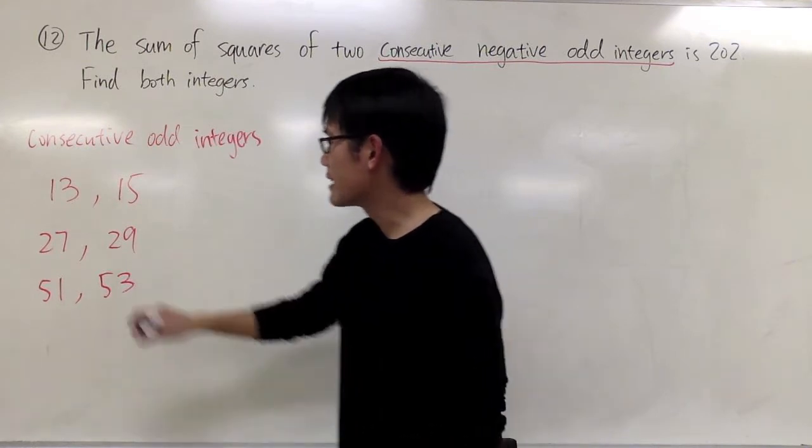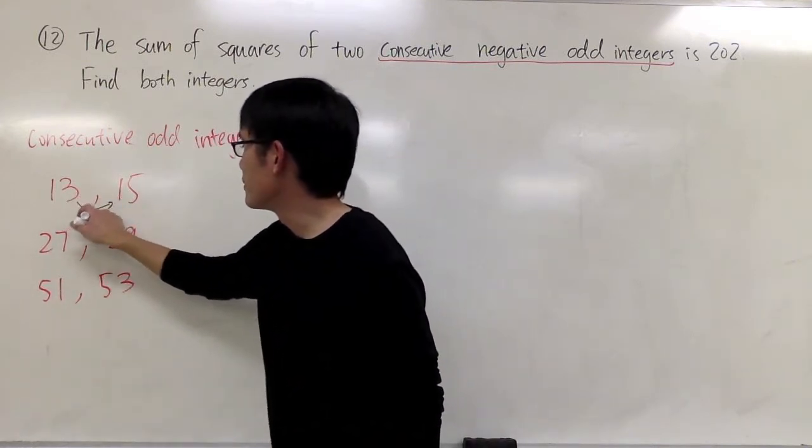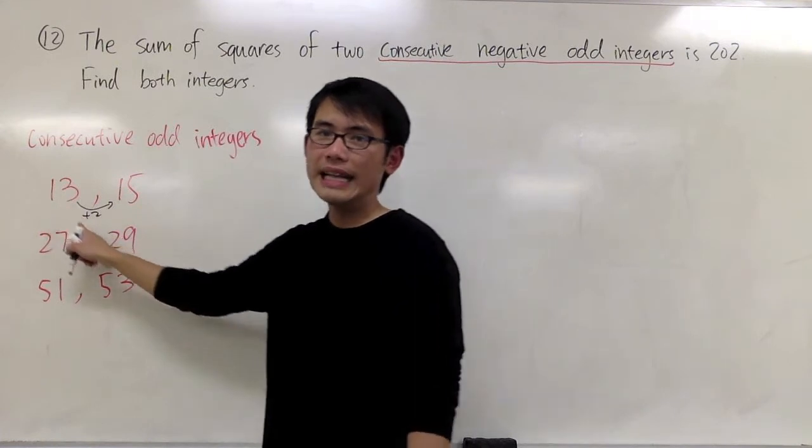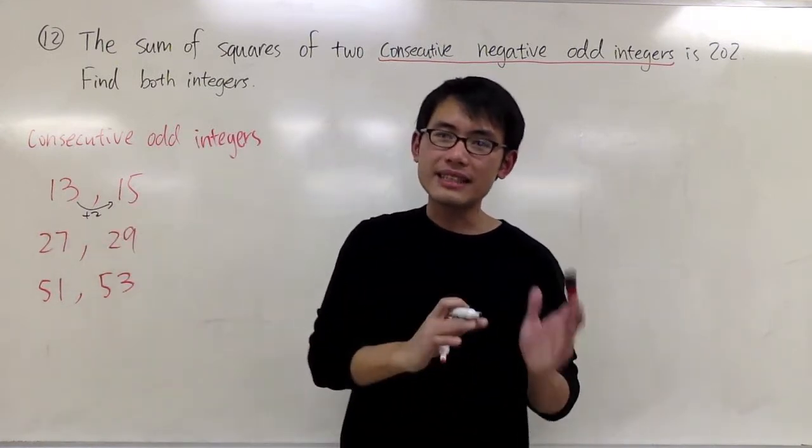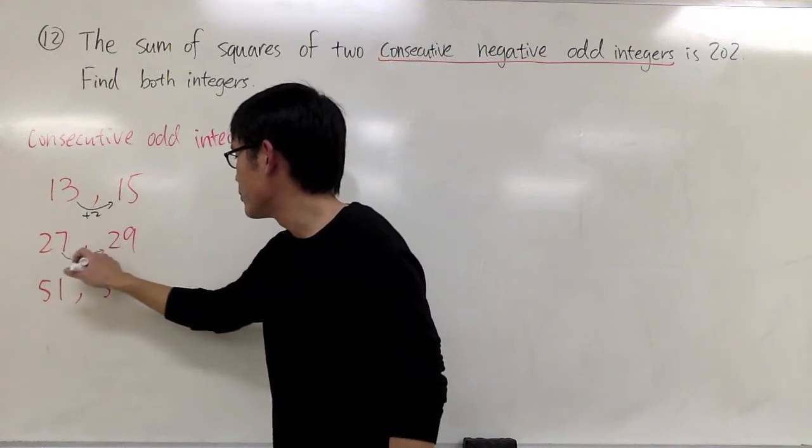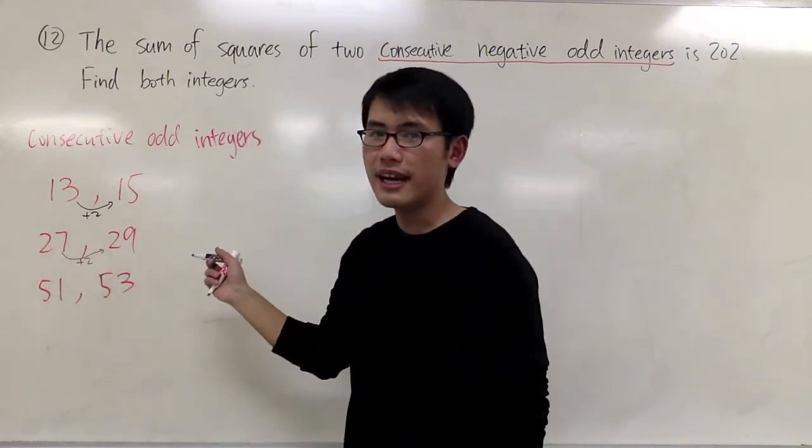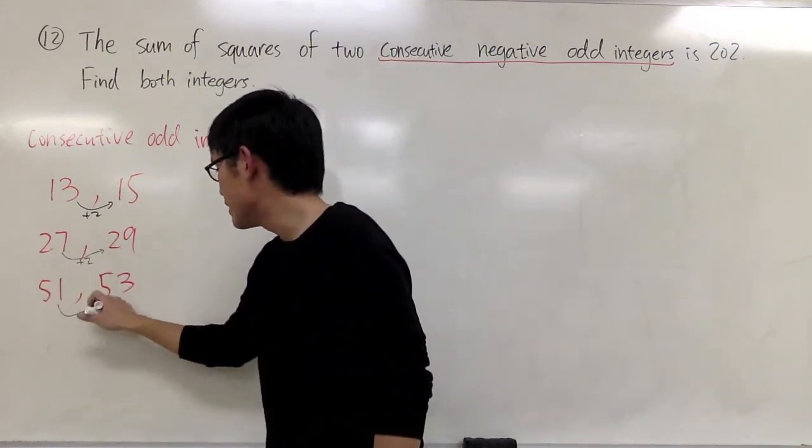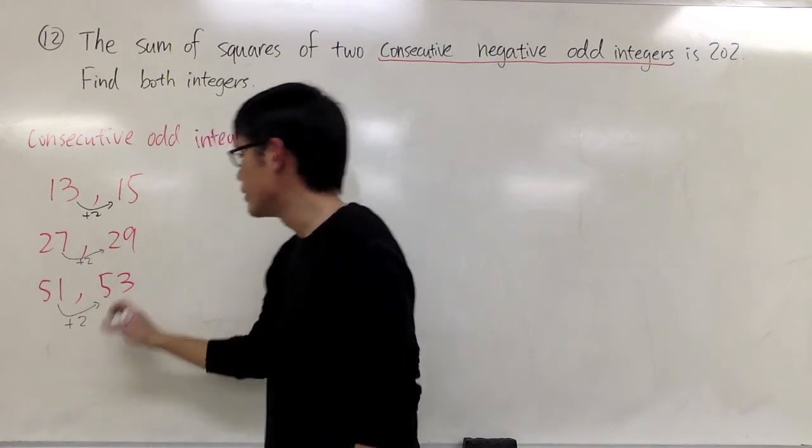Notice that they are always odd by 2. So starting from 13, I need to add 2 to get to the next odd integer. And likewise, 27, I have to add 2 to get to 29. 51, I also have to add 2 to get to 53.